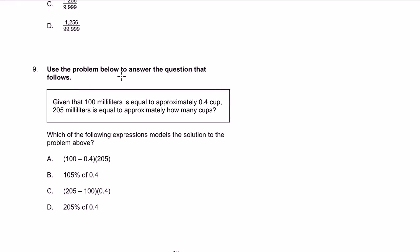We're on problem 9. Use the problem below to answer the question that follows. Given that 100 milliliters is equal to approximately 0.4 cups, 205 milliliters is equal to approximately how many cups? So we could set up a little ratio here. We could say 100 milliliters is to 0.4 cups as 200 milliliters, I'll write the cups here, is to how many cups?